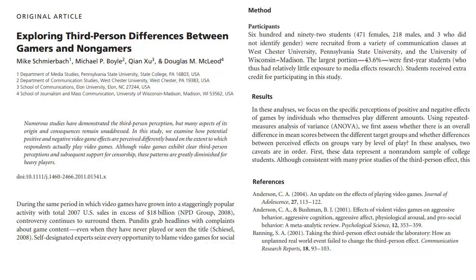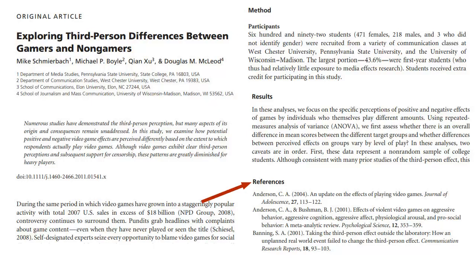Scholarly sources are written by people affiliated with a university. They usually include an abstract or summary of the article. The content consists of original research done by the authors, gives the method for the research study, and discusses the results or findings of the study. There are many references to other sources given in a bibliography or list of references.